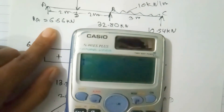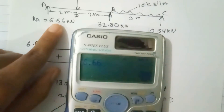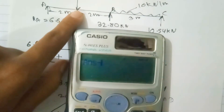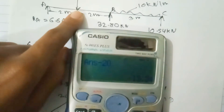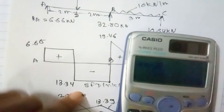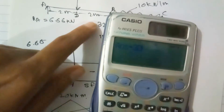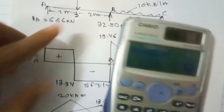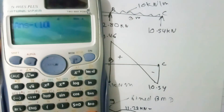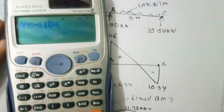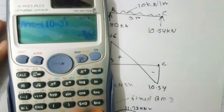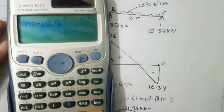Summary of SFD values: +6.66 kN at A (upward), minus 20 kN at the point load giving −13.34 kN, then plus 32.80 kN at B giving +19.46 kN, then minus 10 × 3 = −30 kN from the UDL, plus 10.54 kN at C giving zero. The diagram closes correctly.